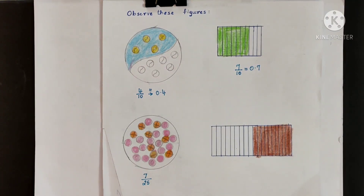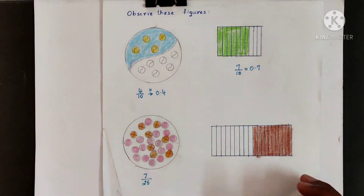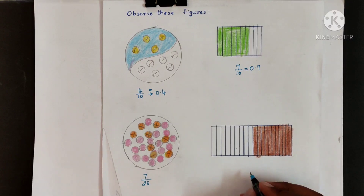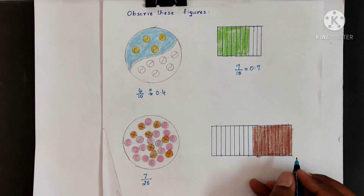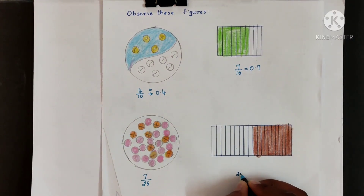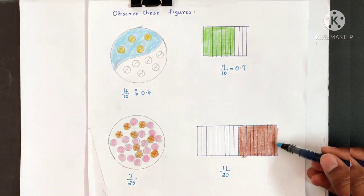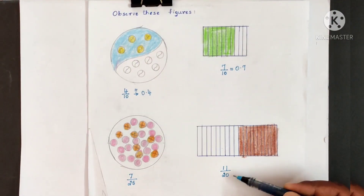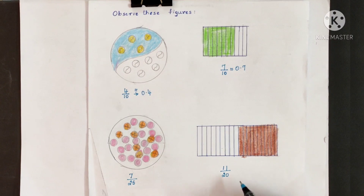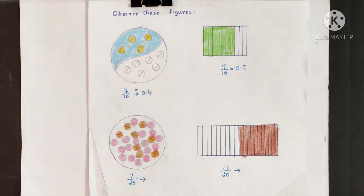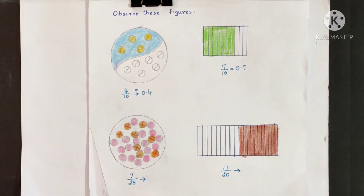How do you write this in decimal fraction? Same way, you see another example here. This strip has been divided into 20 equal parts, and out of 20 equal parts, 11 are shaded. So the fraction for this shaded portion is 11 by 20, or 11 20ths. What is the decimal fraction? This is what we are going to learn in today's class.